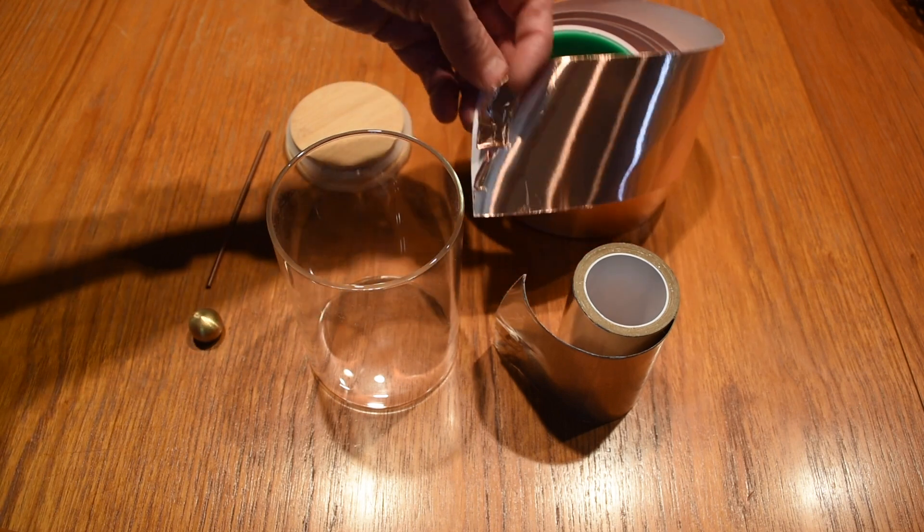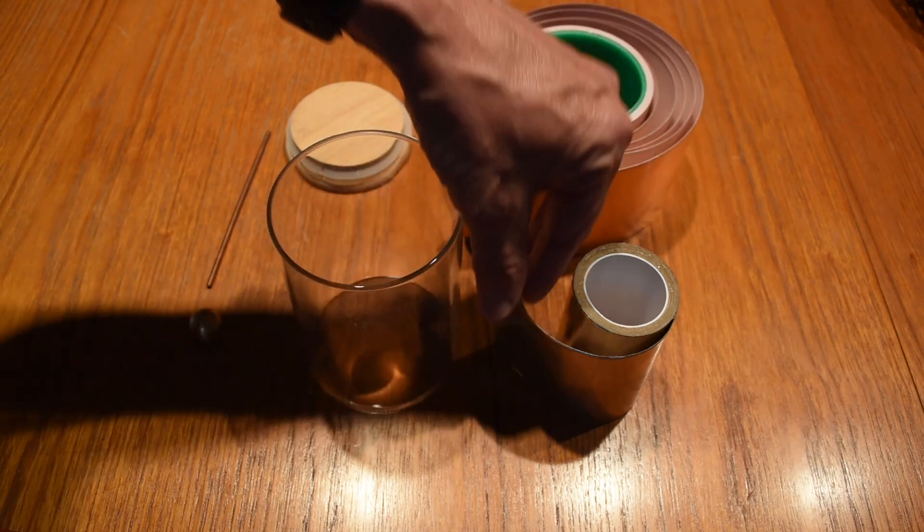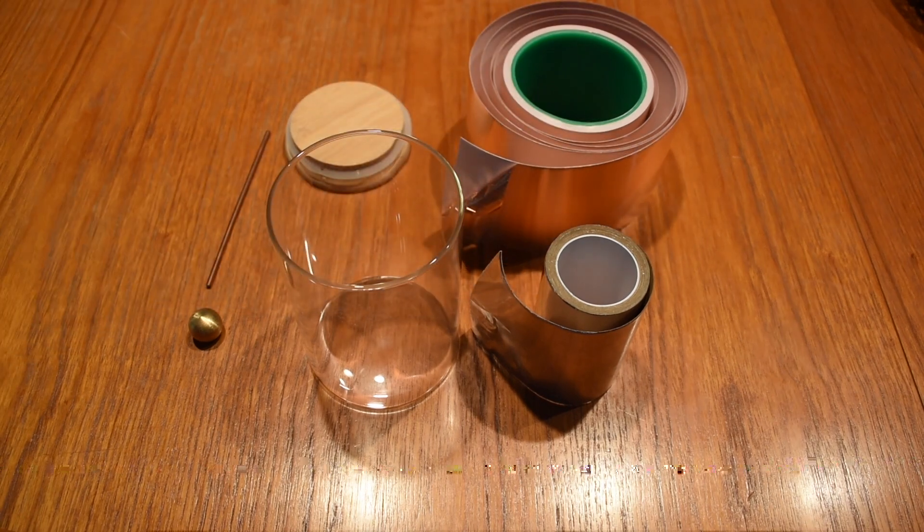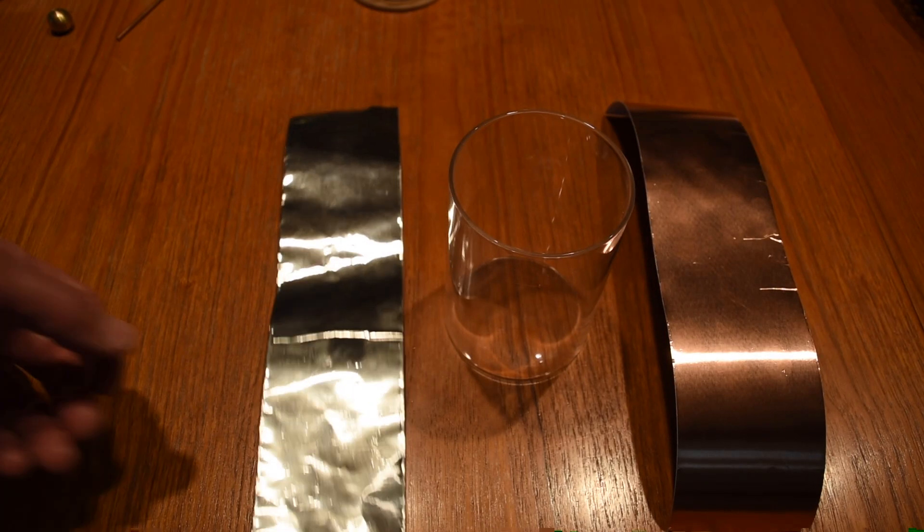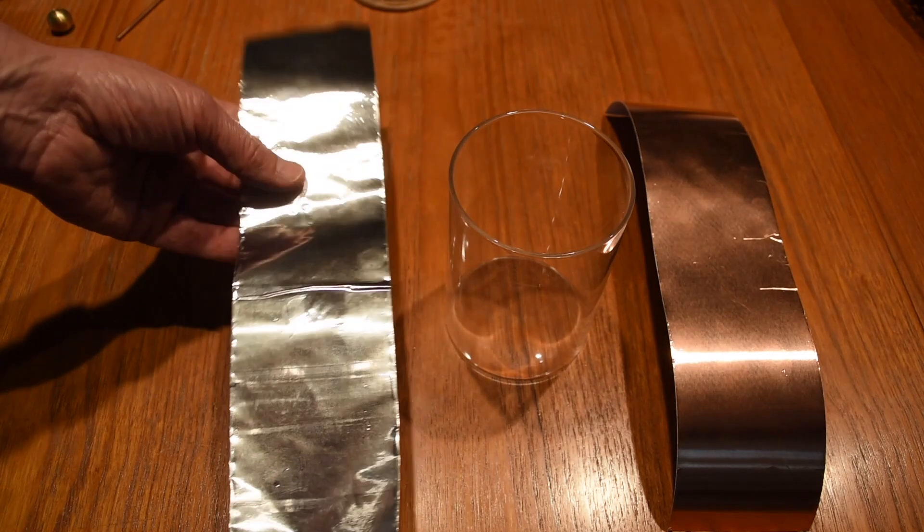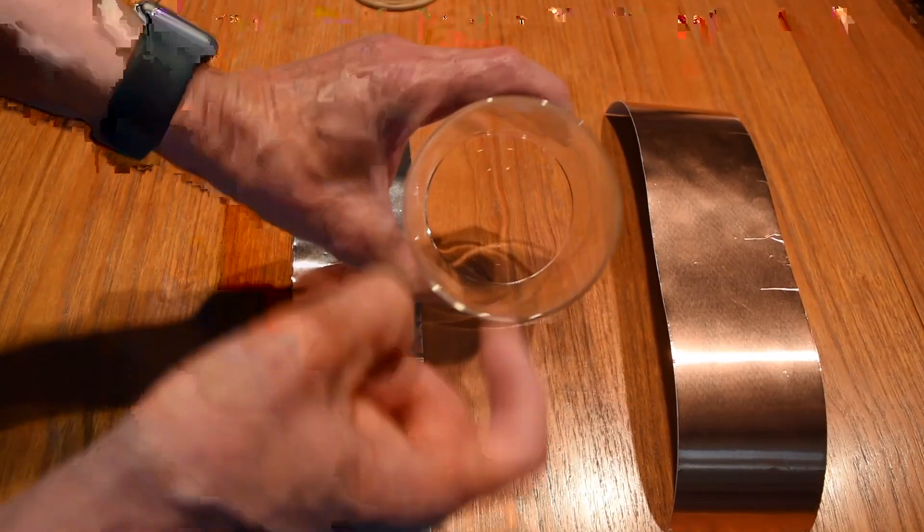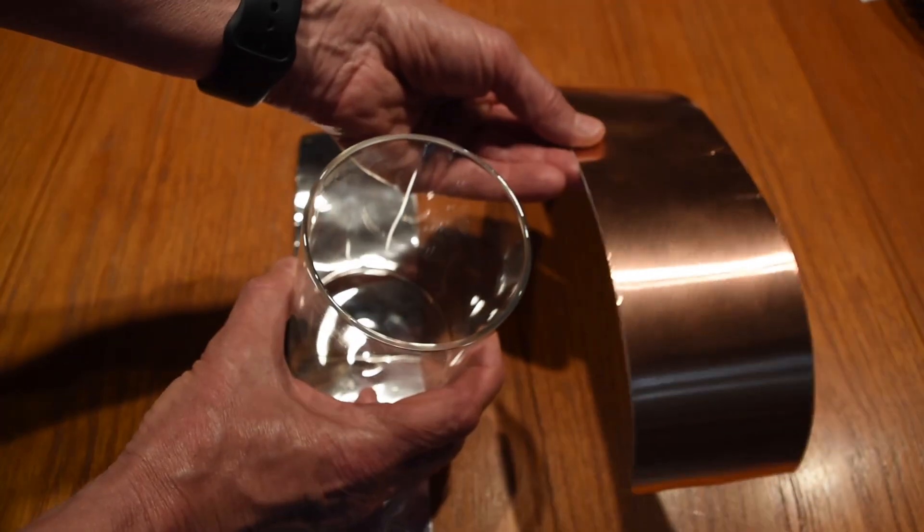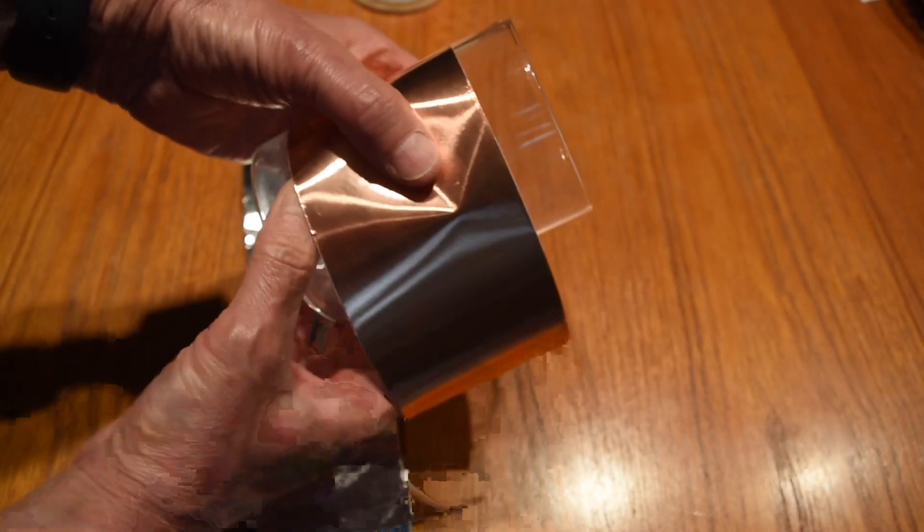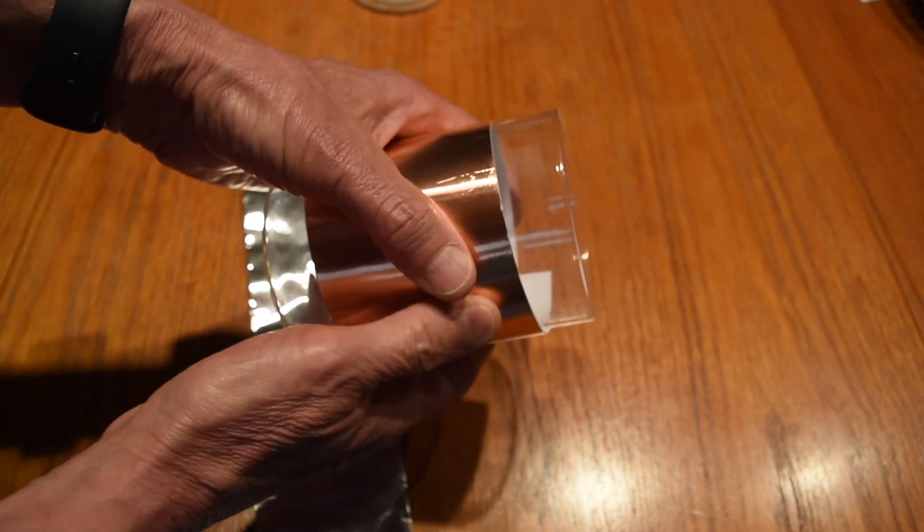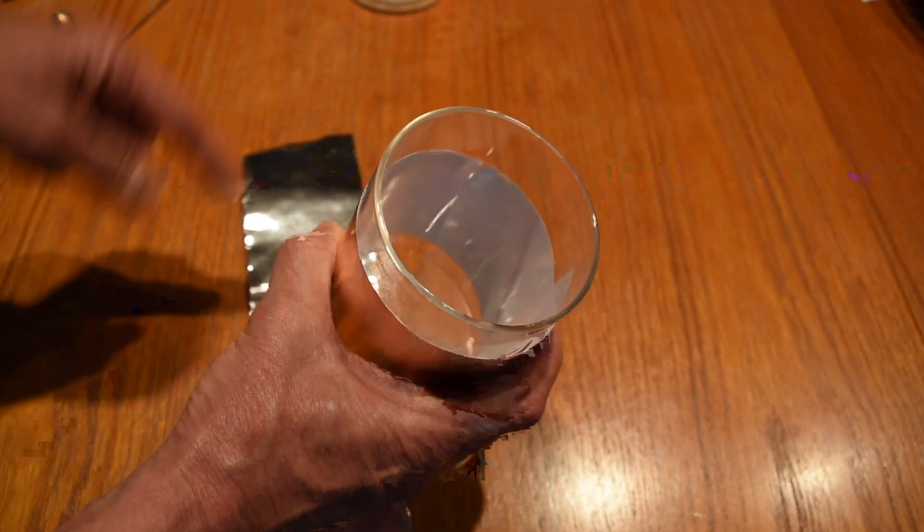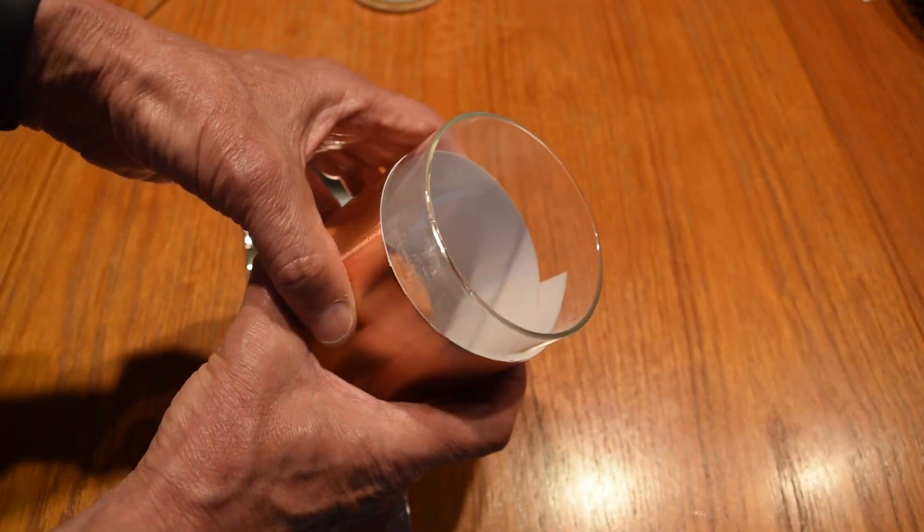These are strips of thin copper or aluminum with an adhesive backing. I've cut a piece of the aluminum tape that I will put around the inside of the jar as the inside conductor of our capacitor. And I've cut a piece of the copper tape that I will put around the outside of our jar as the outside conductor of our capacitor. And of course the jar will be the insulator between the two conductors.